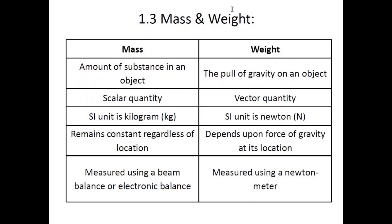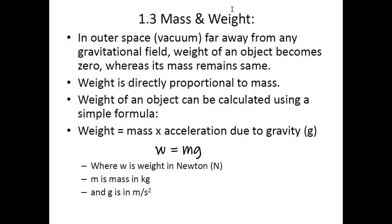The difference between mass and weight: mass is the amount of substance in an object, whereas weight is the pull of gravity on an object. Mass is scalar; weight is vector. The unit of mass is kilograms; the unit of weight is newtons. Mass always remains constant regardless of location, whereas weight depends on the force of gravity at that location. Mass is measured using a beam balance; weight is measured using a newton meter or force meter. In outer space, far from any gravitational field, weight becomes zero — that is why astronauts float in a space station — while mass remains the same.